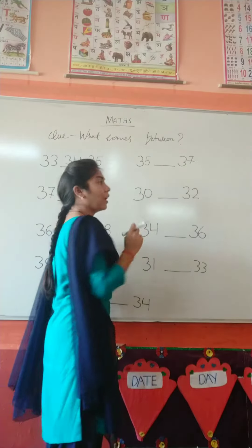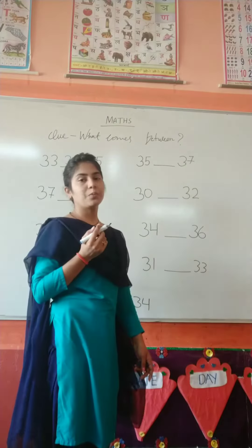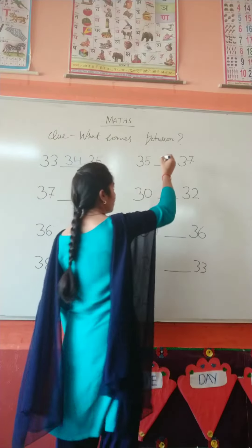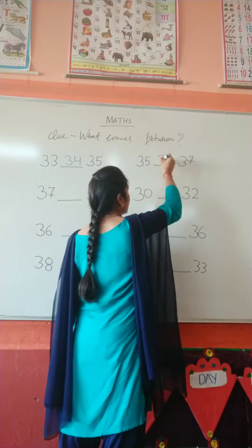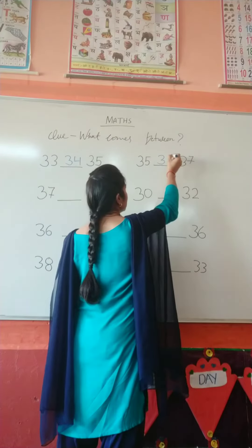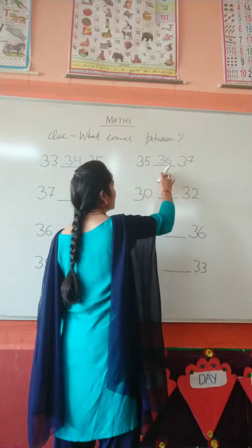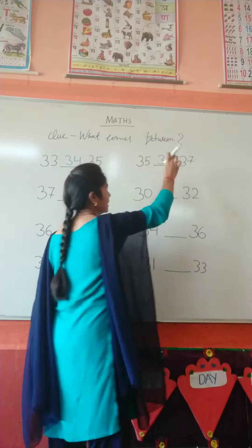And here is 37. What comes between 35 and 37? 36. 35, 36, 37.